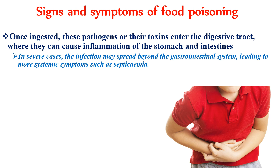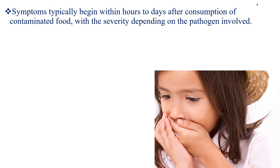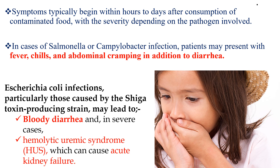The clinical presentation of food poisoning can vary depending on the causative organism, but the most common symptoms include nausea, vomiting, abdominal cramps, diarrhea which can be watery or bloody, and fever. Symptoms typically begin within hours to days after consumption of contaminated food, with severity depending on the pathogen involved. In cases of Salmonella or Campylobacter infection, patients may present with fever, chills, and abdominal cramps in addition to diarrhea. E. coli, particularly disease caused by Shiga toxin-producing strains, may lead to bloody diarrhea, and in severe cases, hemolytic uremic syndrome, which can cause acute kidney failure.